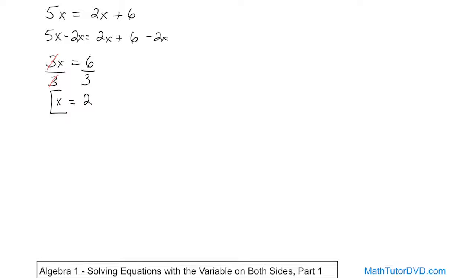Now I want to take a second to show you that it doesn't really matter which direction you go — you're going to get the same answer. In this case, we moved the 2x over here. Let's rewrite the problem and solve it slightly differently, because you might do something a little different than what I do. Instead of moving the 2x, let's go the other way: let's get rid of the 5x and move it over here. You want to move all the x's to one side.